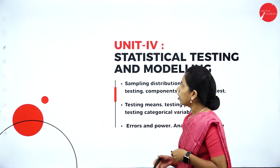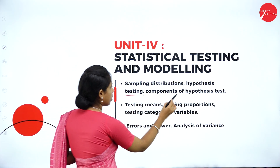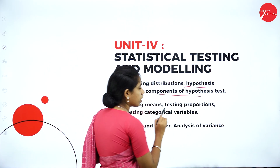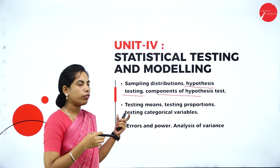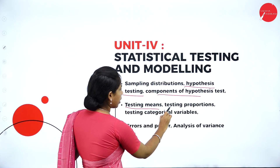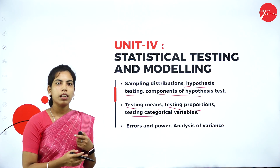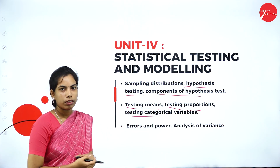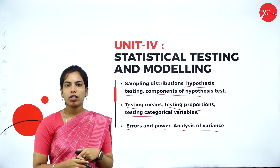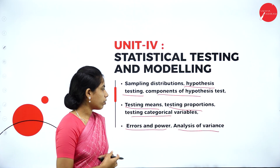In Unit 4, sampling distributions and hypothesis testing are covered. Hypothesis testing is a key testing component, and you will learn what components are needed to perform it. The unit also covers testing means, testing proportions, and testing categorical variables — which represent different varieties of data. Errors and powers, as well as analysis of variance, are also covered, along with statistical components such as mean, mode, and median.